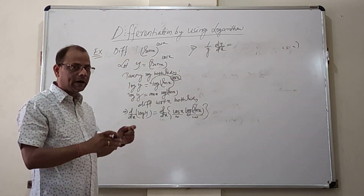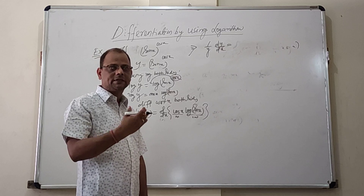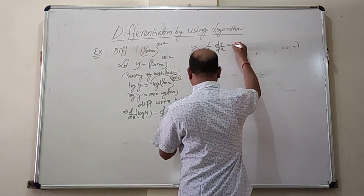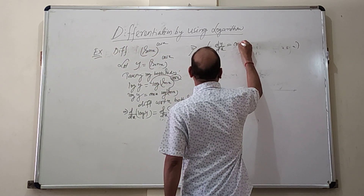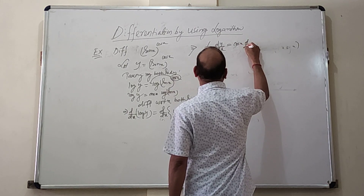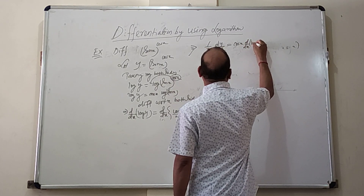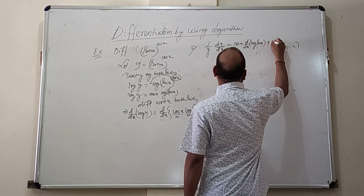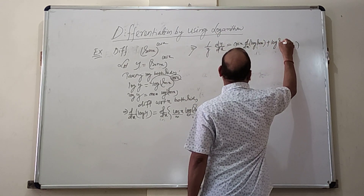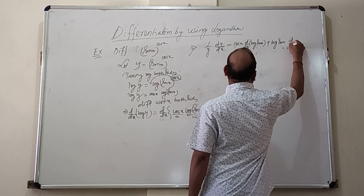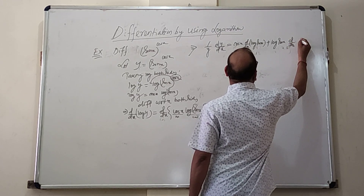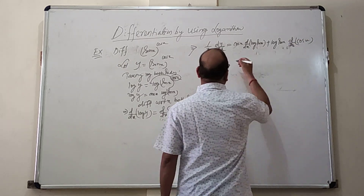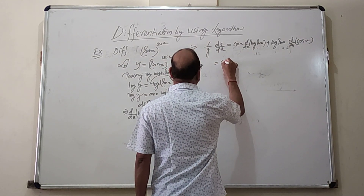Using the product rule: first times derivative of second plus second times derivative of first. That is: cos x times d/dx of log(sin x), plus log(sin x) times d/dx of cos x. The derivative of cos x is minus sin x.